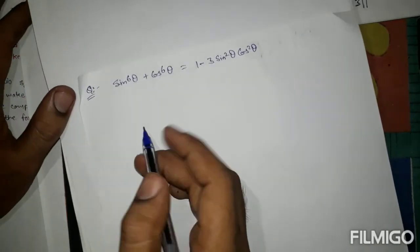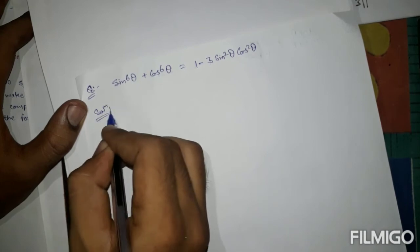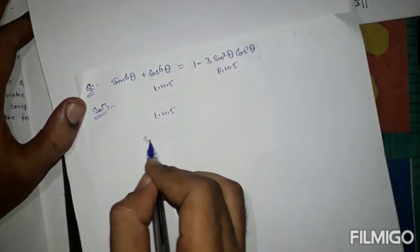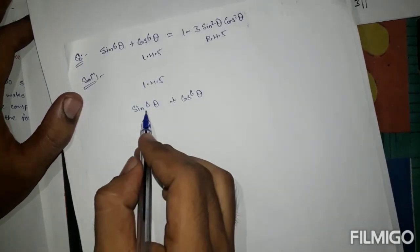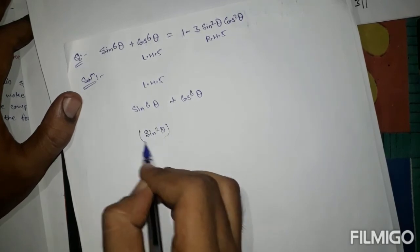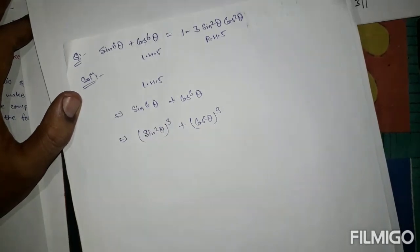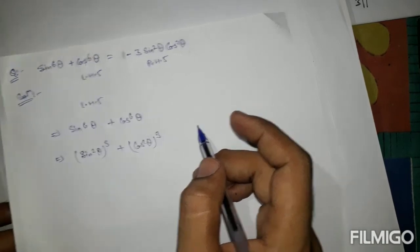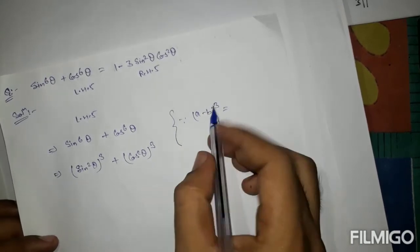Our next question is: sin⁶θ + cos⁶θ = 1 - 3sin²θ·cos²θ. We follow the same procedure. Take LHS: sin⁶θ + cos⁶θ. Write this as (sin²θ)³ + (cos²θ)³.